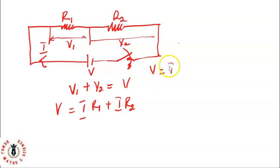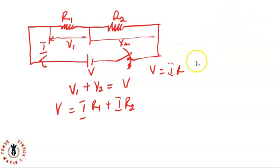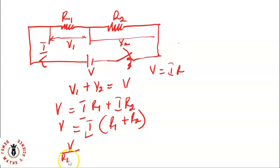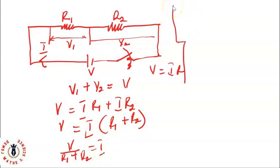So V equals IR1 plus IR2. Remember from Ohm's law that V equals IR. If you missed the last lesson on resistance in series, check the link above or in the description below. So V equals I times (R1 plus R2), which means V divided by (R1 plus R2) equals I.